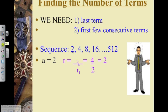I'm taking my common ratio by taking the second term and dividing it by the first term.